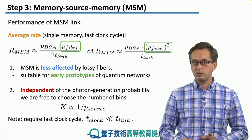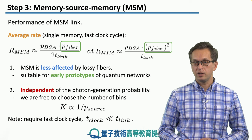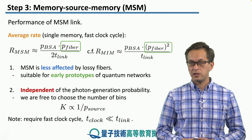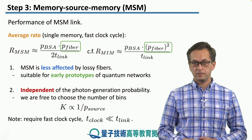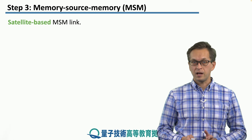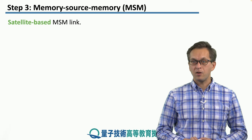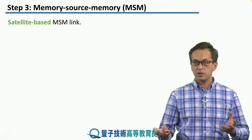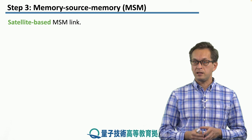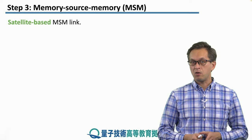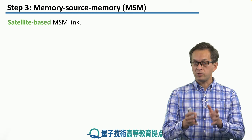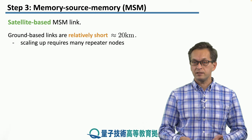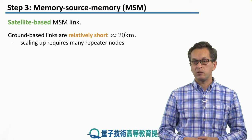Note that we require very fast hardware: the clock cycle must be much, much shorter than the communication delay given by T-link. Now, let's consider where we actually put this source. So far we've been thinking about the BSA or the source in MSM as something placed on the ground, but there is no need for that — we can even install it on a satellite and launch it into orbit.